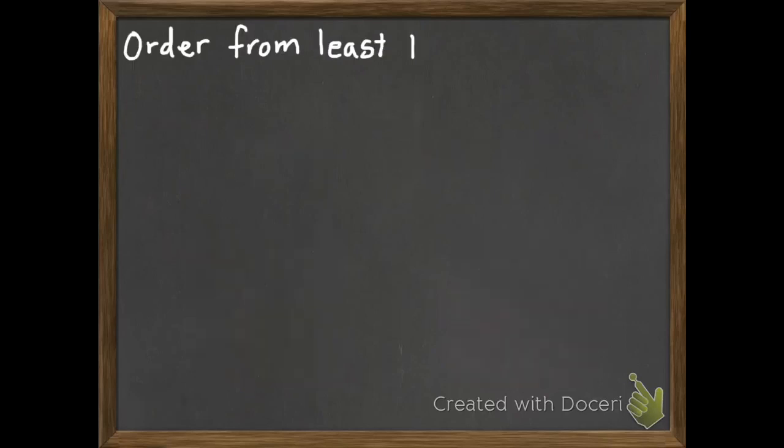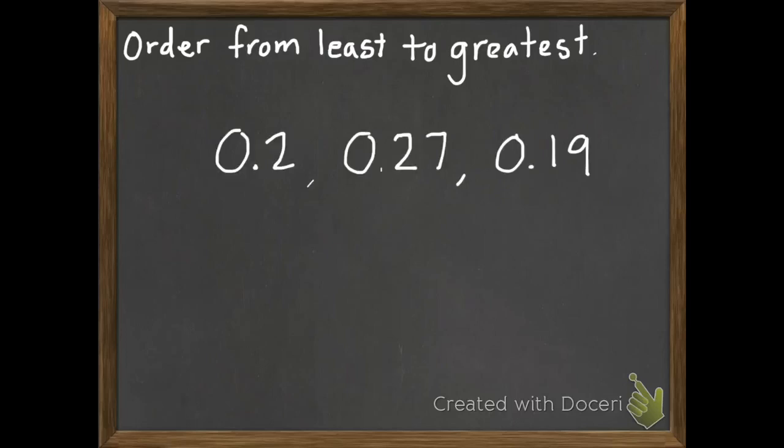We're also going to be ordering 3 decimals from least to greatest. So here's 3 decimals, 2 tenths, 27 hundredths, and 19 hundredths.